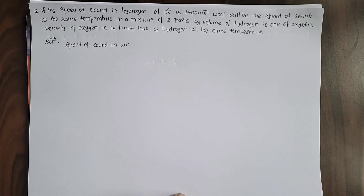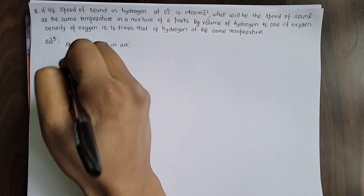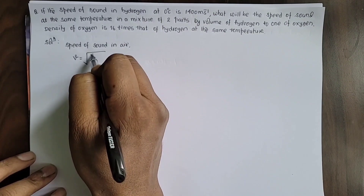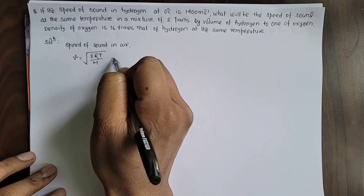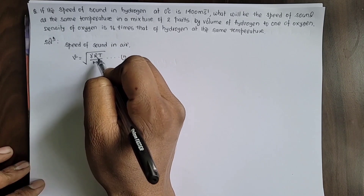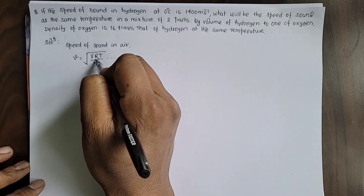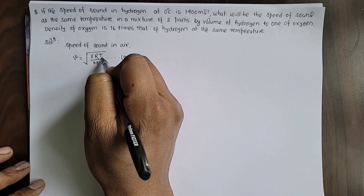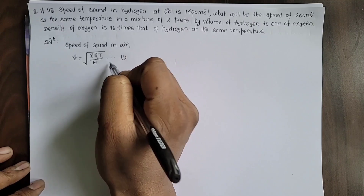The density of oxygen is 16 times that of hydrogen at the same temperature. We know that the speed of sound in air can be calculated by the formula V = √(γRT/M), where γ is the ratio of molar heat capacities, that is Cp by Cv, R is the universal gas constant, T is the temperature in Kelvin, and M is the molar mass of the gas.